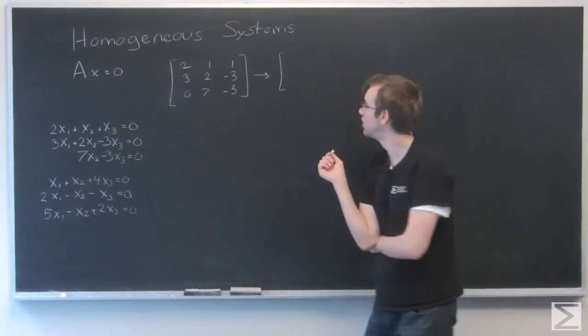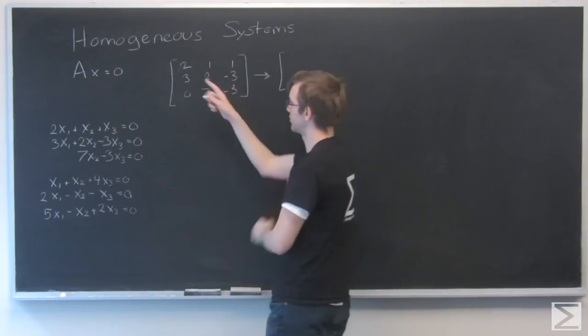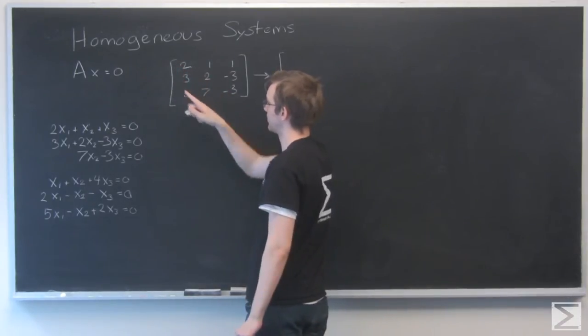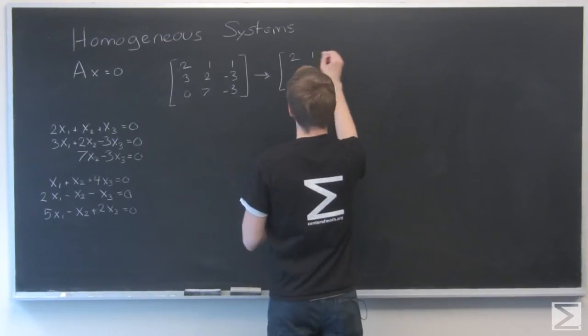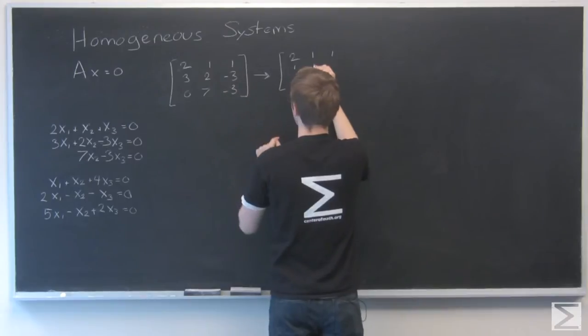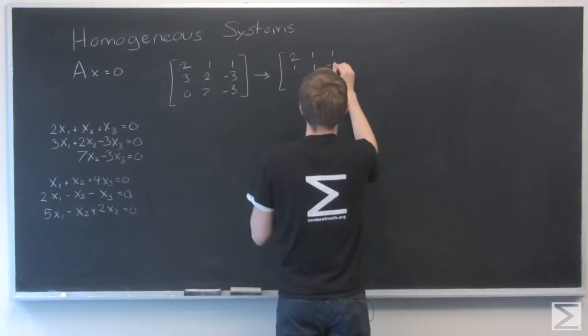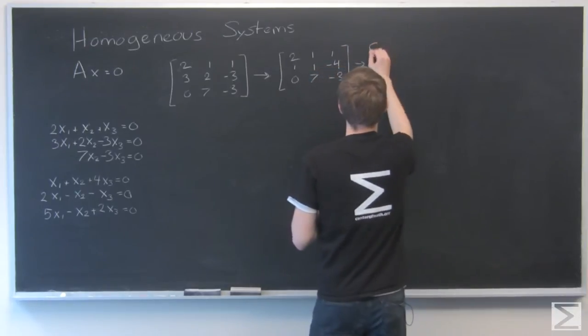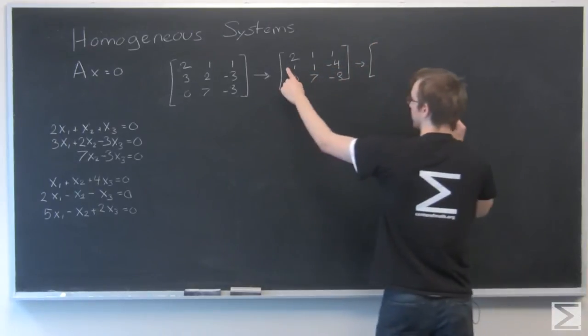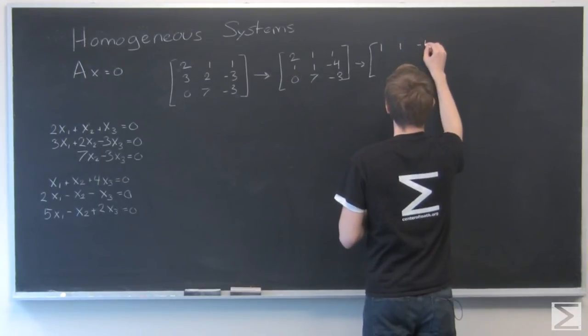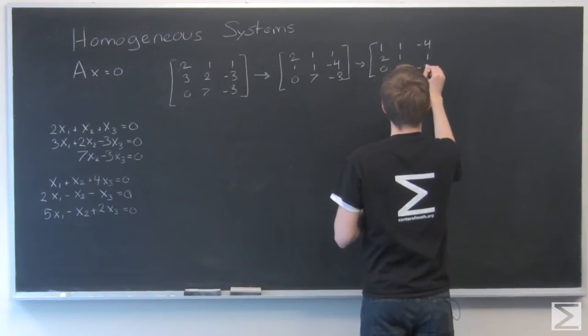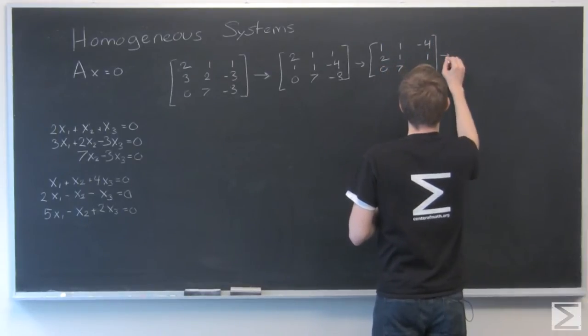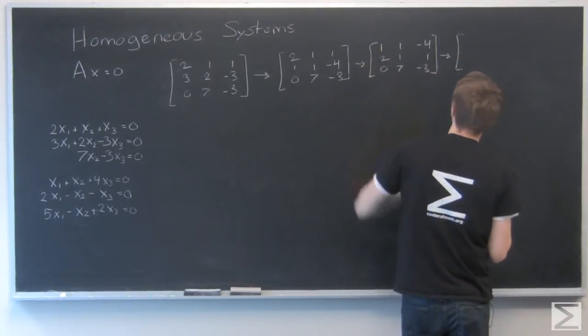So I can just go about solving this. First thing I'm going to do, I'm going to subtract the first row from the second row. That will give me a 1. 3 minus 2 is 1, 2 minus 1 is 1, minus 3 minus 1 is minus 4. Now I'm going to swap and put that row with a leading one at the top.